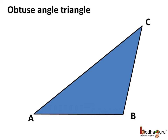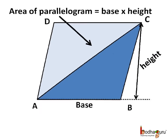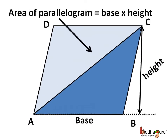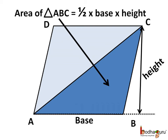Now let's take an obtuse angle triangle. Triangle ABC is half of this parallelogram ABCD. We know the area of the parallelogram is base multiplied by height. So the area of triangle ABC is half the area of the parallelogram, that is half multiplied by base multiplied by height. The height of the parallelogram is also the height of triangle ABC. This way, we can prove the area of an obtuse triangle is also half multiplied by base multiplied by height.